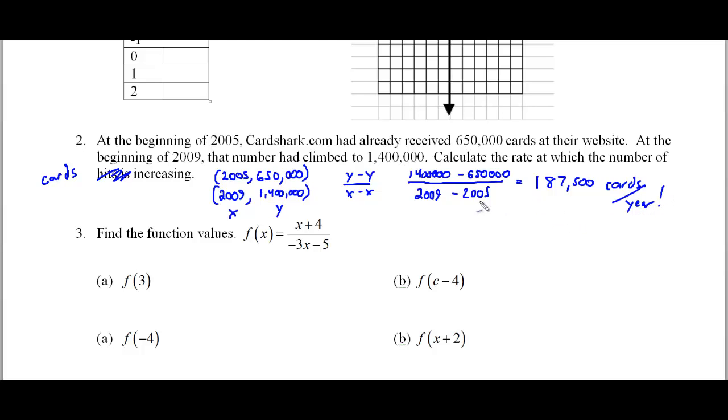I subtracted these and divided it by four because the difference between two thousand nine and two thousand five is four. And you get a whole number one hundred eighty seven thousand five hundred and this would be at the rate of cards per year. So that's how fast it's increasing. Again, subtract these two values, which gives you seven hundred fifty thousand divided by four gives you one hundred eighty seven thousand five hundred.